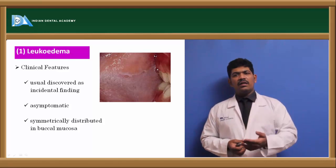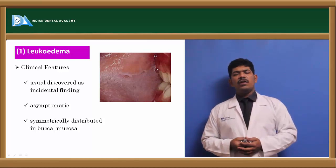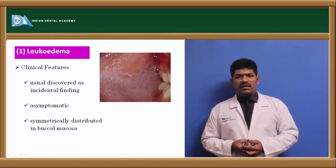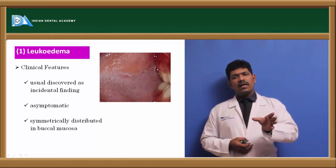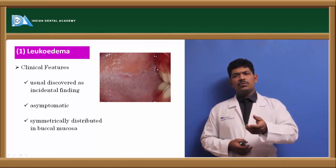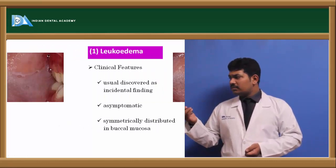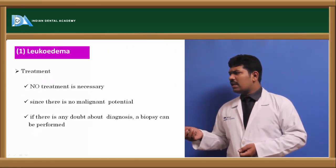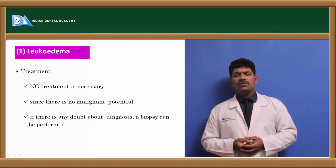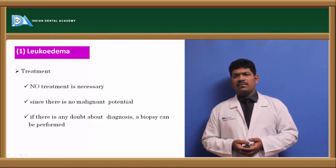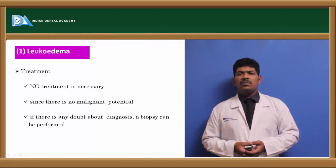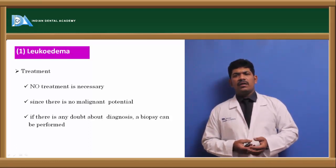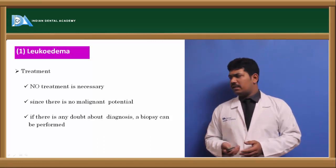Leukoedema is most commonly found in non-whites and is more evident in non-whites. The coloration would vary from whitish to slightly grayish. This is a totally harmless lesion so no treatment is necessary. If the lesion is aesthetically displeasing to the patient, it could be removed by laser ablation of that particular area.